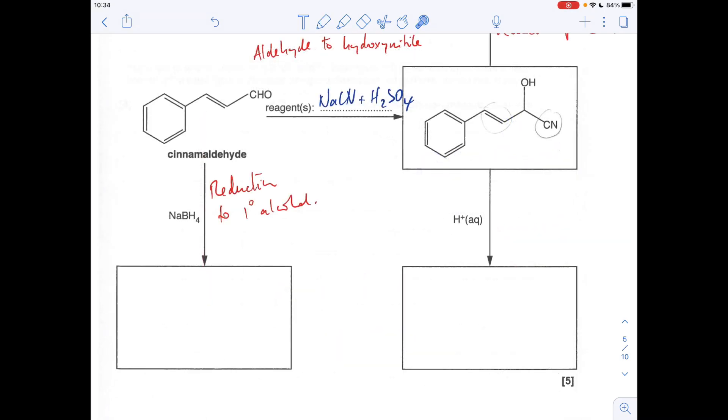So if we do this one now, so we've got an aldehyde group, which is reacting with NaBH4. That's a reducing agent. So it's going to go to a primary alcohol. So that's what you would make there.